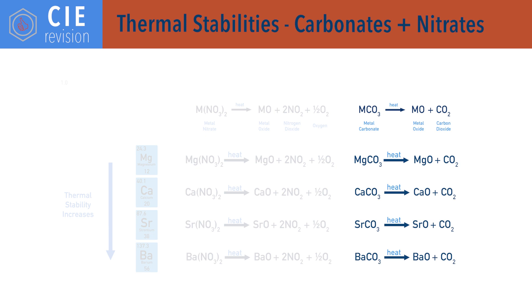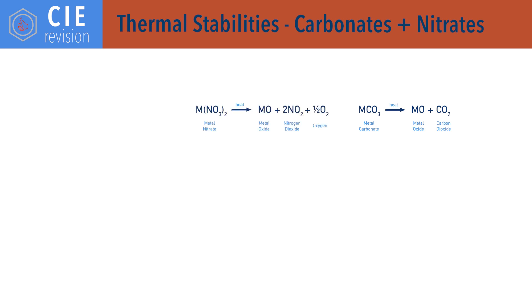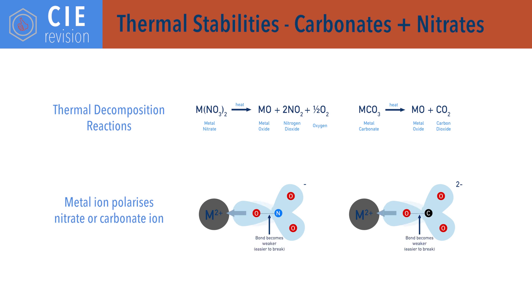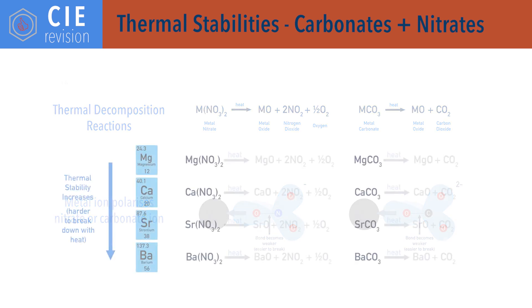These reactions are called thermal decomposition reactions. They happen because the positively charged metal ions in the compounds are able to polarise the negatively charged nitrate or carbonate ion, weakening the bonds in it and enabling the ion to be split apart when heated. It gets harder to break apart the group 2 metal nitrates and carbonates going down the group because the metal ions have a larger atomic radius with the same 2+ charge, meaning they polarise the negative ions less. As a result, more heat is required for thermal decomposition to occur.